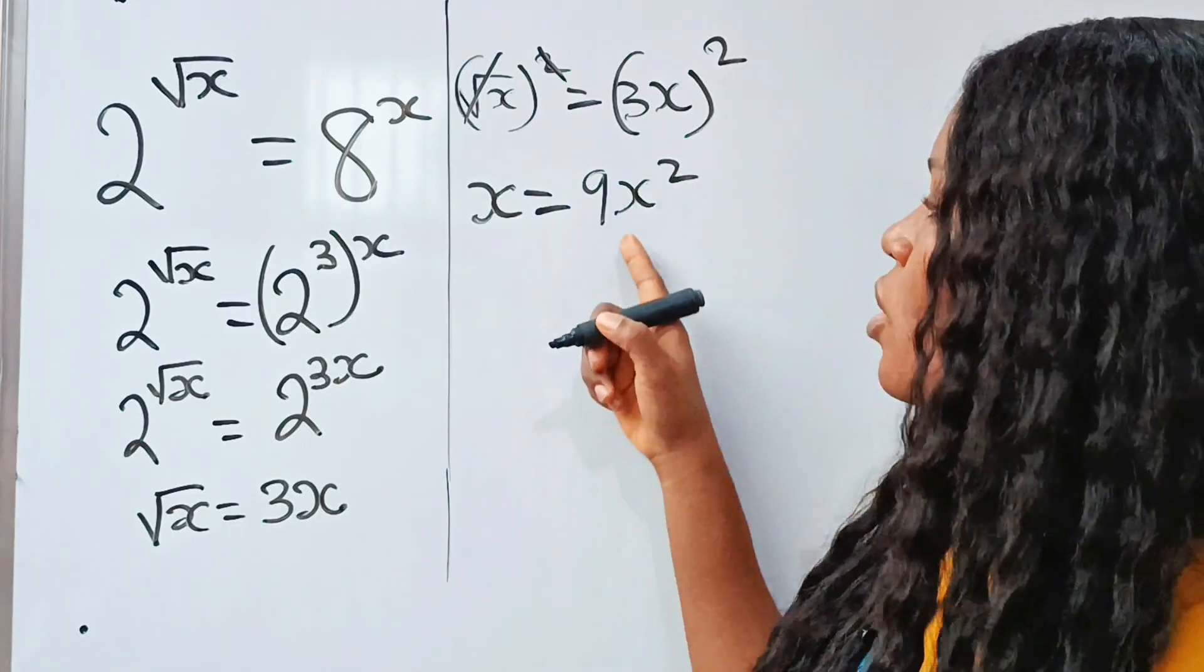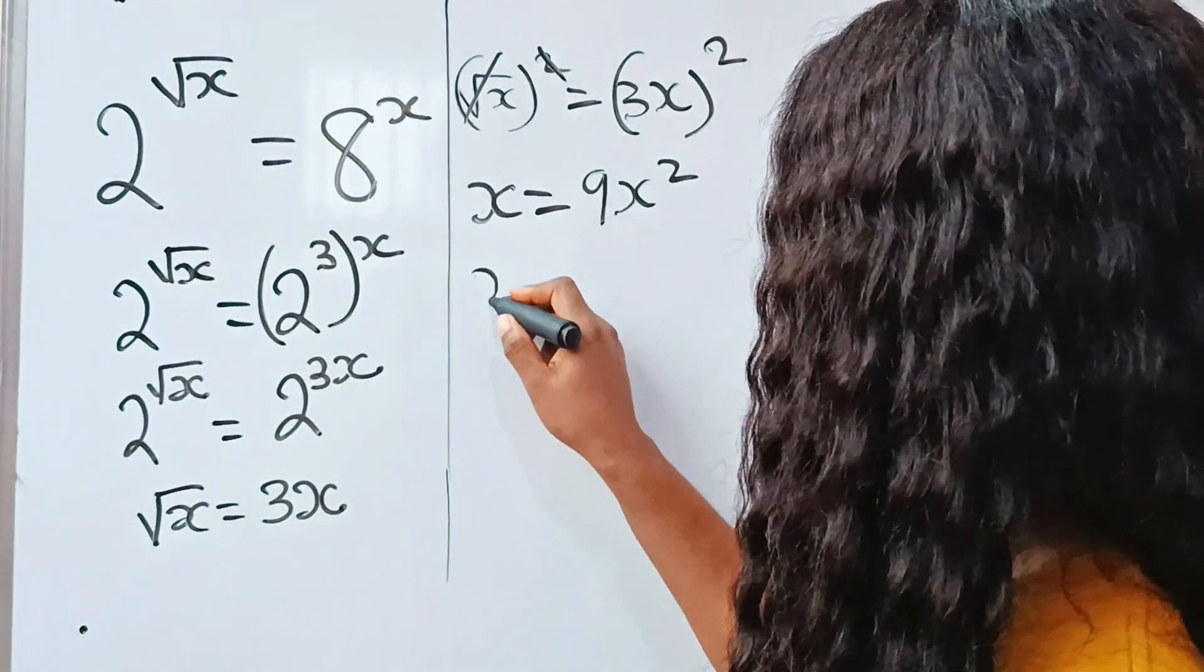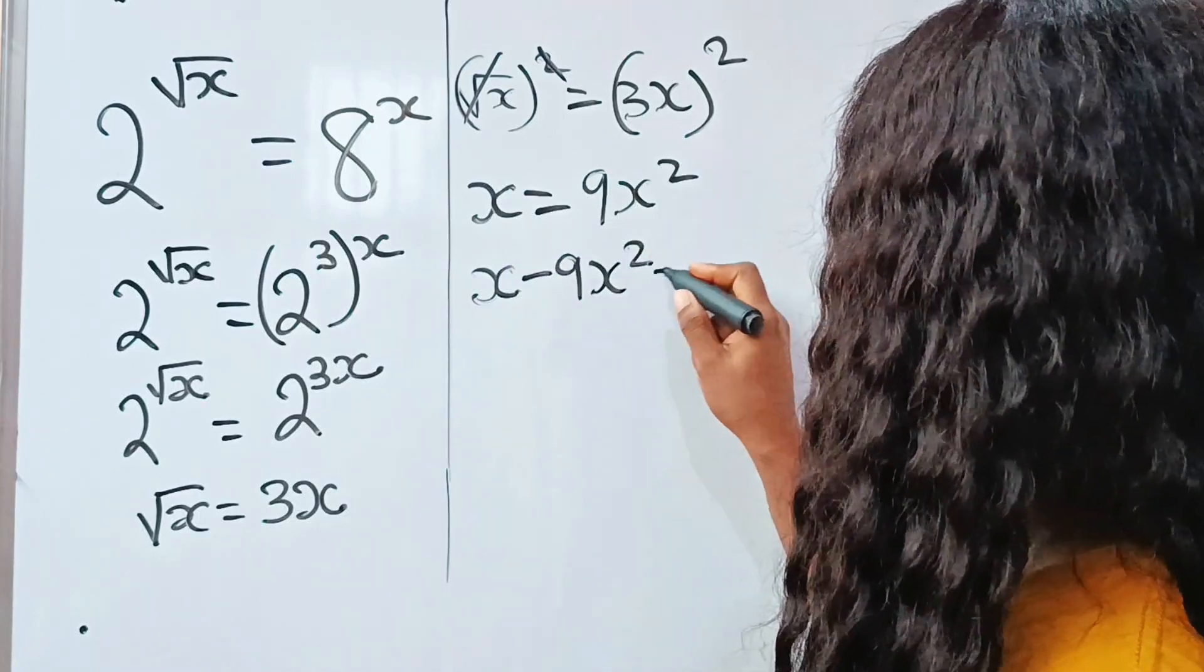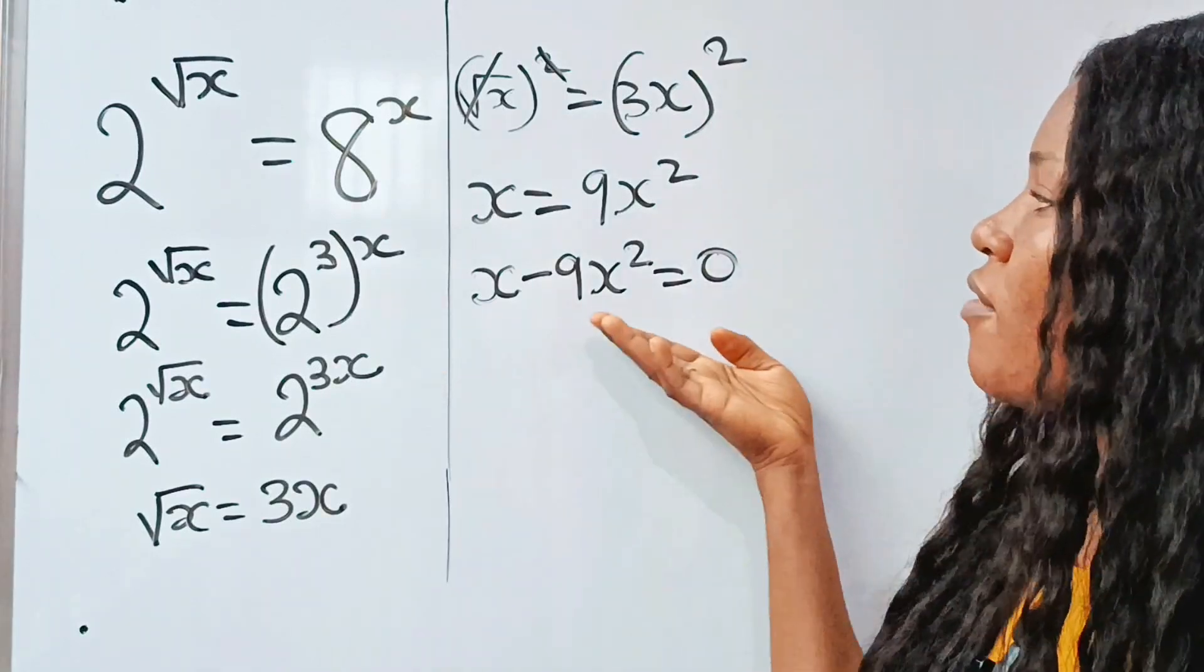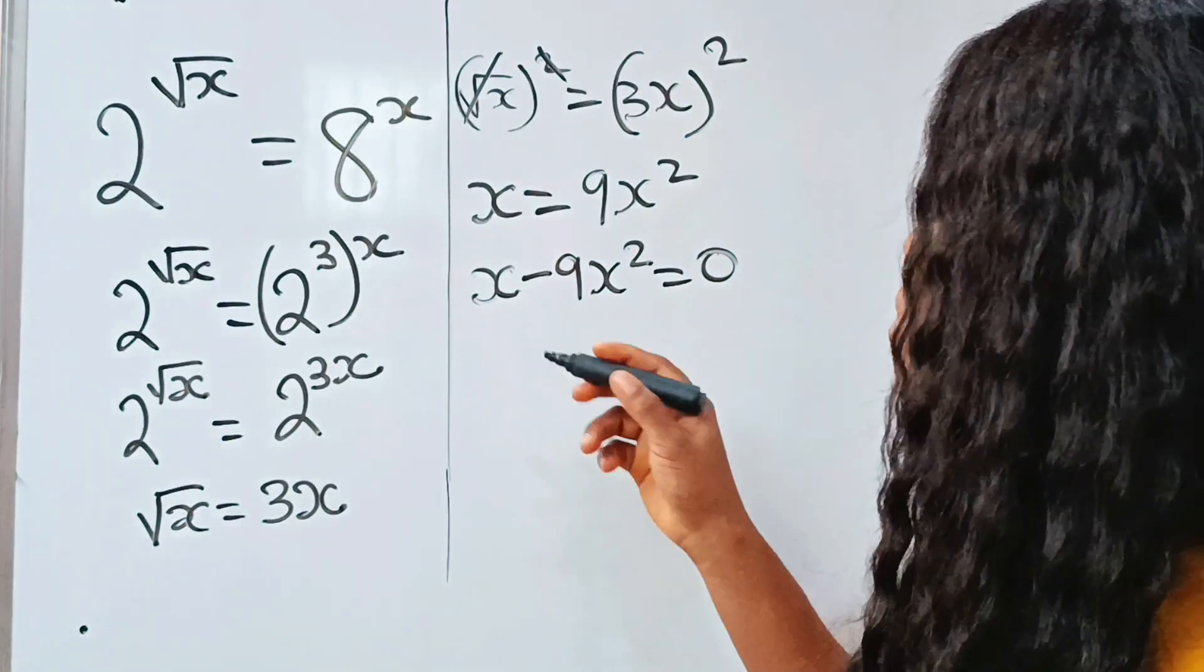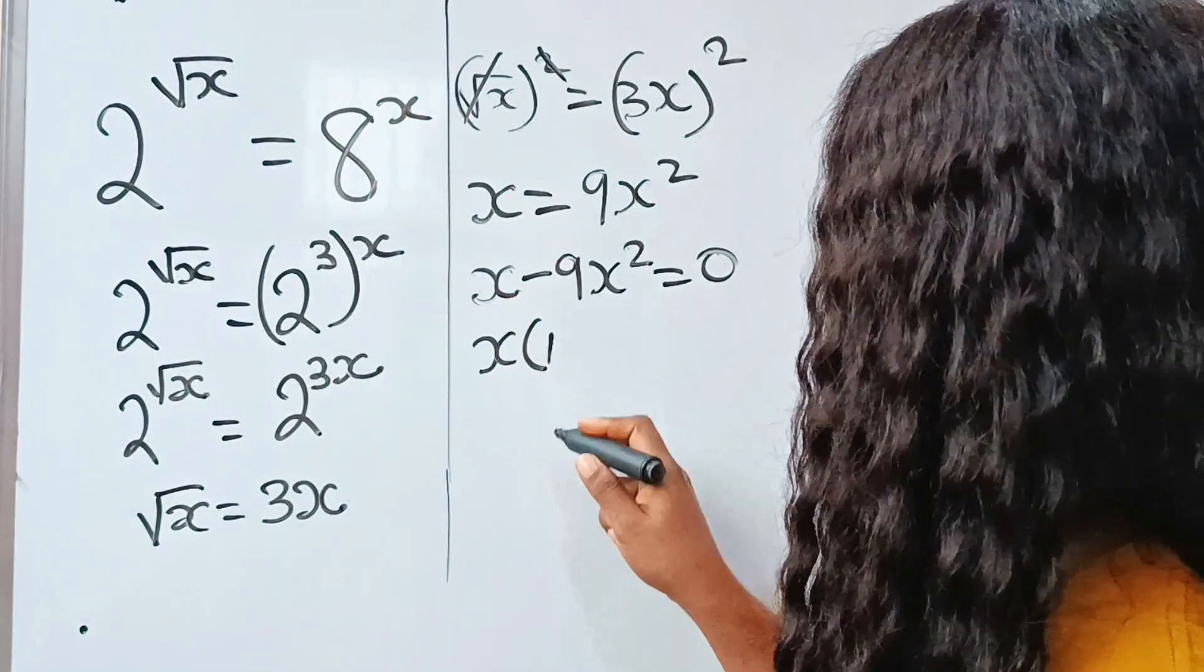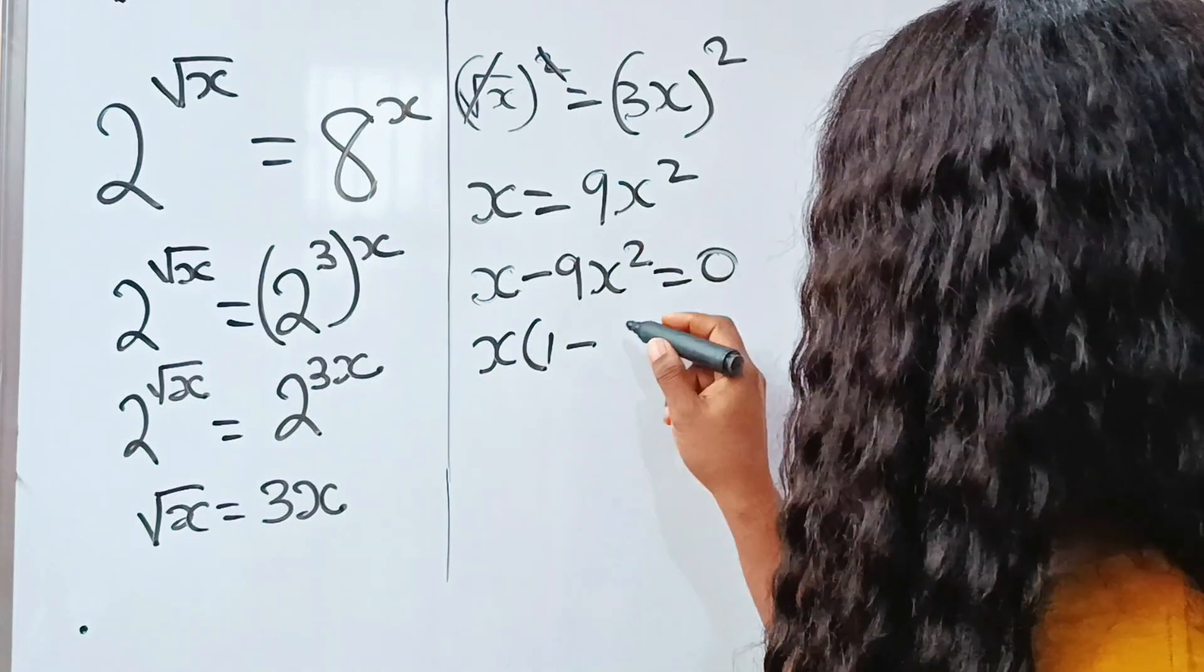So let's bring this to the other side of the equation, so we have x minus 9x squared is equal to zero. Now what do they have in common? They have x, right? So let's factorize x out.